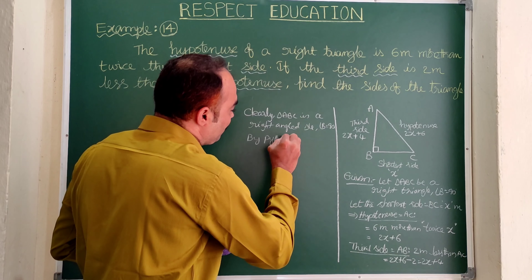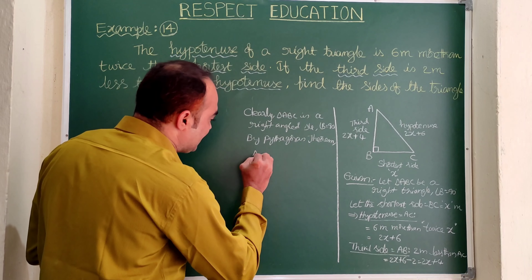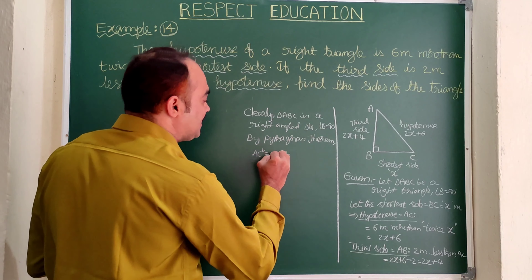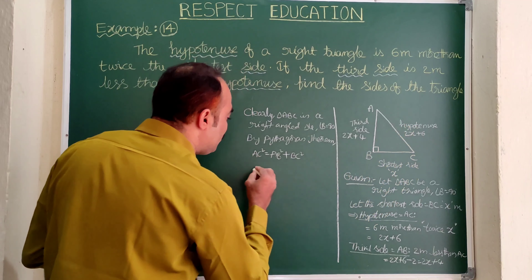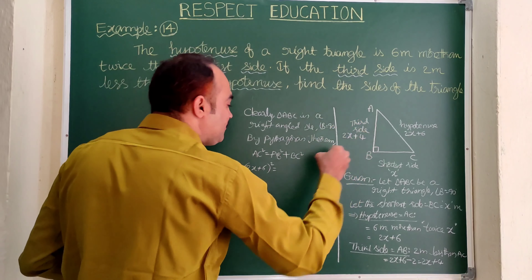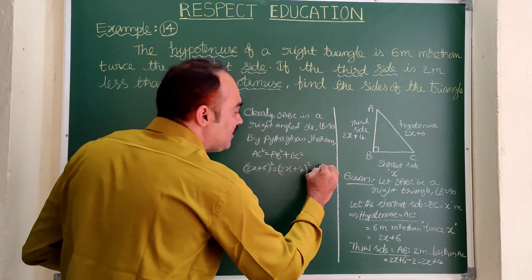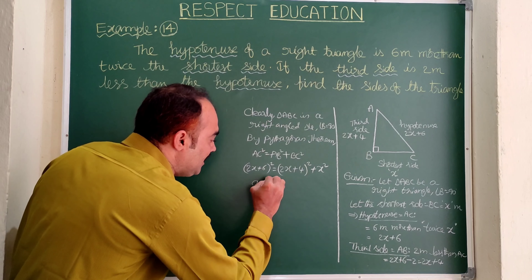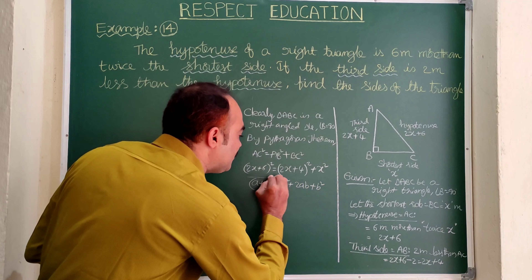Triangle ABC is a right angled triangle where angle B is equal to 90 degrees, so we can apply the Pythagorean theorem. By Pythagoras theorem, hypotenuse squared equals the sum of squares of the other two sides: AC² equals AB² plus BC². Substituting: (2x + 6)² equals (2x + 4)² plus x².